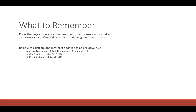The first step, once you calculate your relative risk or odds ratio, is to convert it into a percentage. If the relative risk or odds ratio is greater than 1, you take the relative risk or odds ratio minus 1, times 100. If the relative risk or odds ratio is less than 1, you do 1 minus the relative risk or odds ratio, times 100. This gives you a percentage.